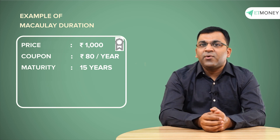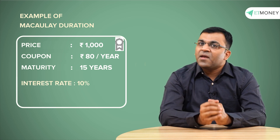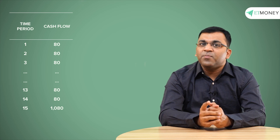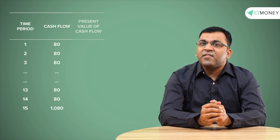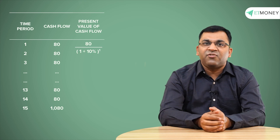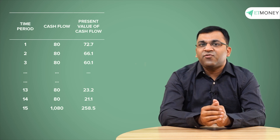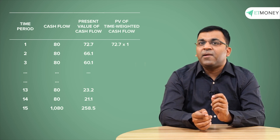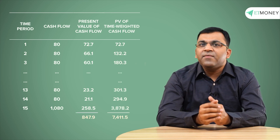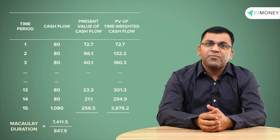Now let's make this example more real. We have a 1,000 rupee bond at an 8% annual coupon and a maturity of 15 years, with a prevailing RBI interest rate of 10%. First, we map out the yearly cash flows — 80 rupees for each of the 15 years plus the 1,000 rupee principal in the 15th year. Second, we find the present value of each cash flow by discounting at the 10% interest rate. Third, we apply time weights to the present values — year 1 cash flow of 72.7 is multiplied by 1, year 2 of 66.1 is multiplied by 2, and so on. Finally, we total the time-weighted present values and divide by the non-weighted present values to get the Macaulay duration, which in this case comes to 8.7 years.